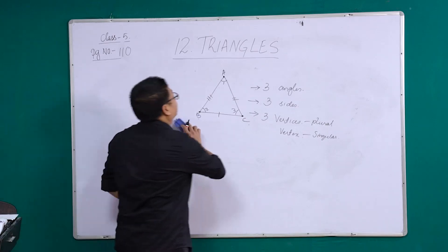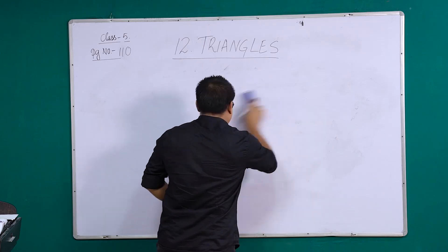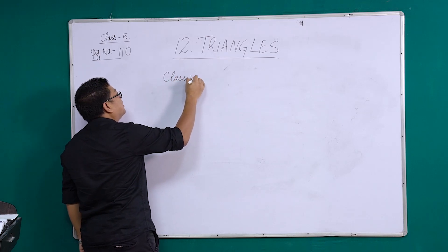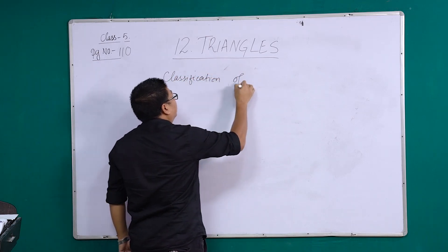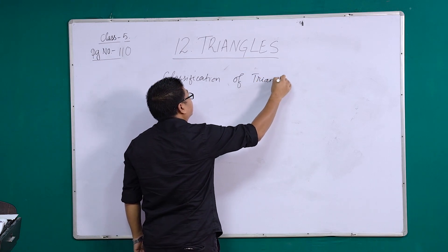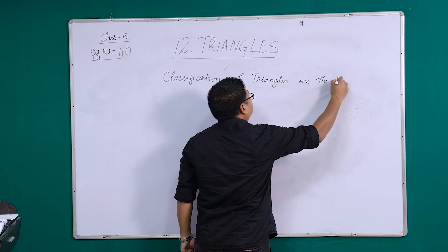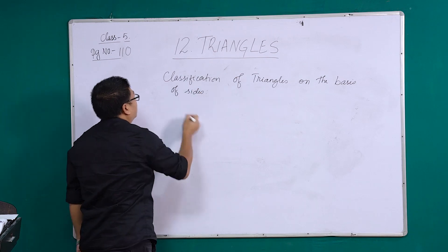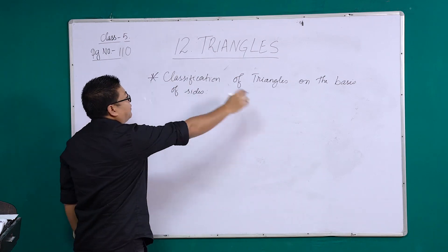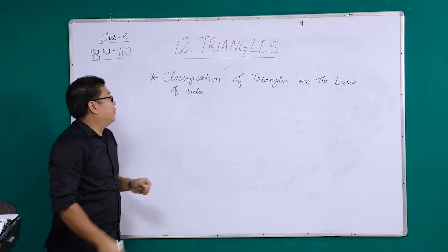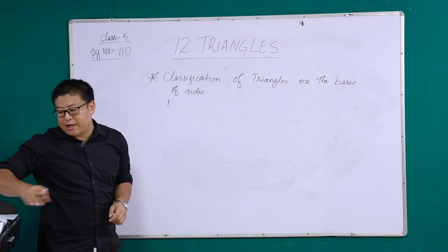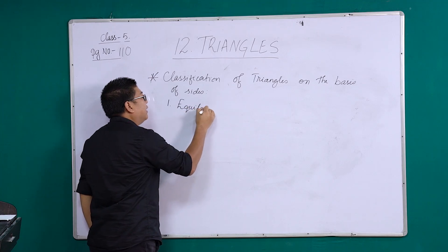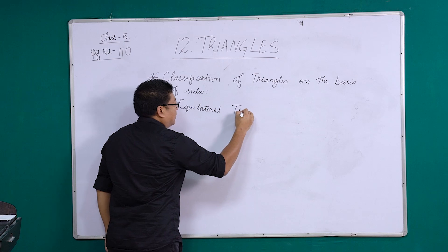Let's move on to the next topic. We will be learning about classification of triangles on the basis of sides. This is the first topic: classification of triangles on the basis of sides. The first type of triangle we are going to talk about is called an equilateral triangle.